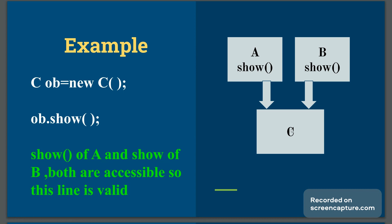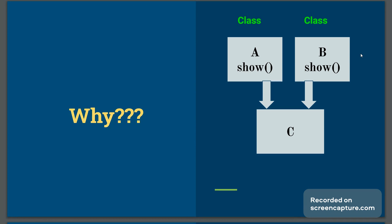Since C is inherited from both classes, calling either show method is syntactically valid, so there seems to be no error. But the compiler gets confused about which body to link with the function call at the time of compilation — there is complete ambiguity. This is the reason why Java does not support multiple inheritance directly.